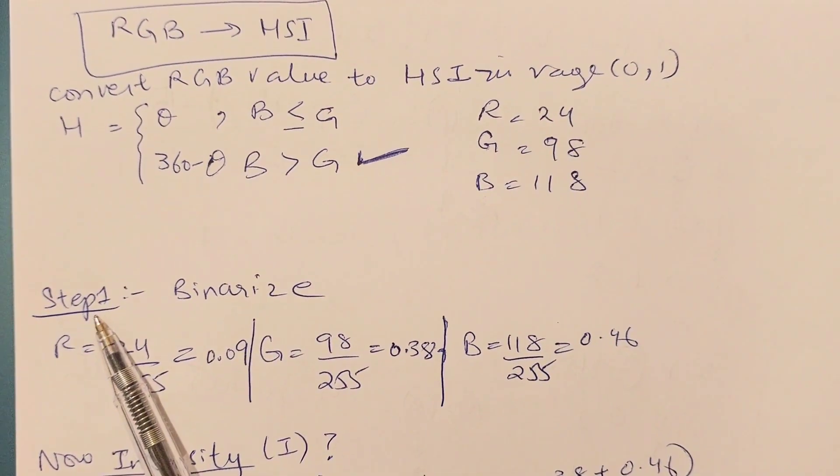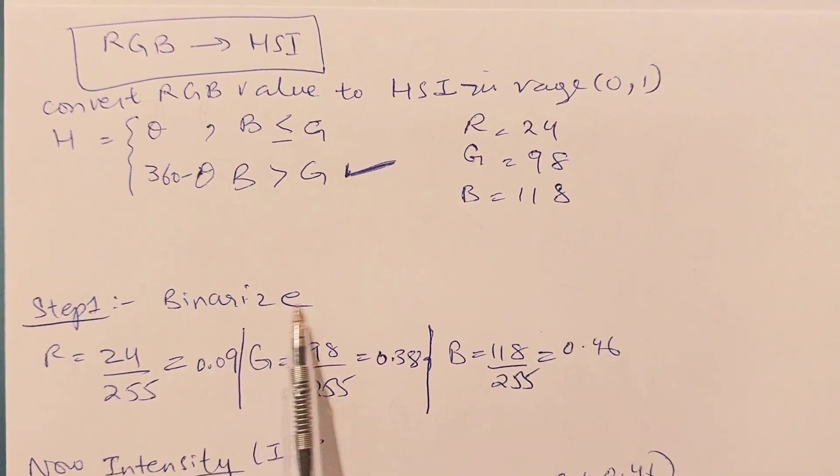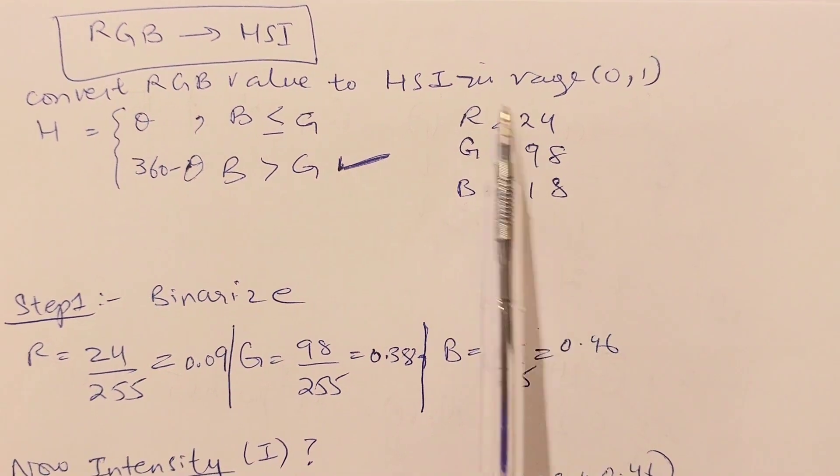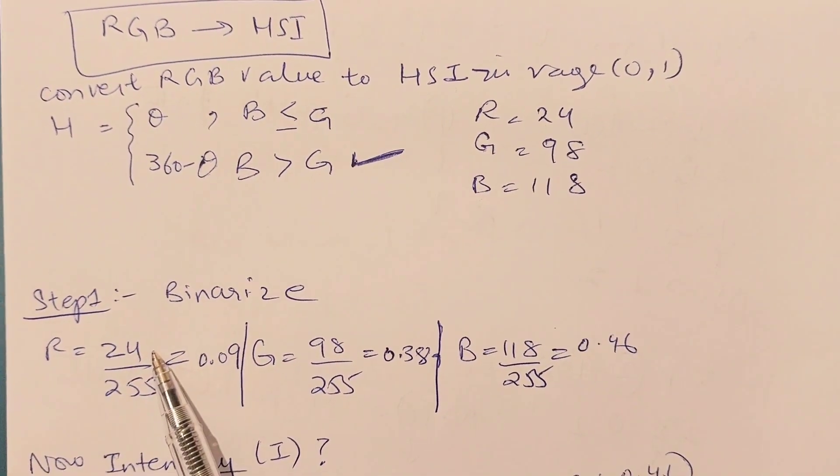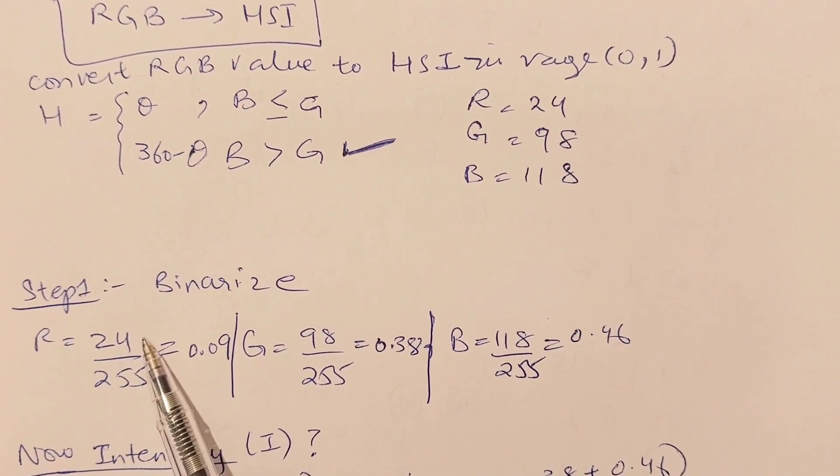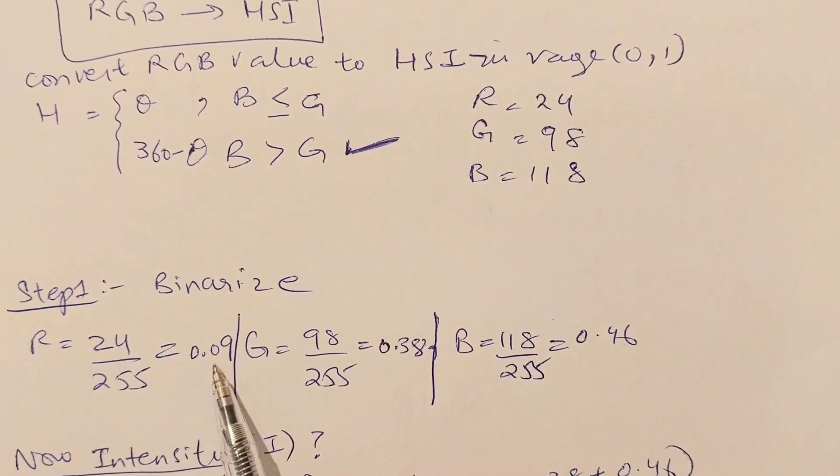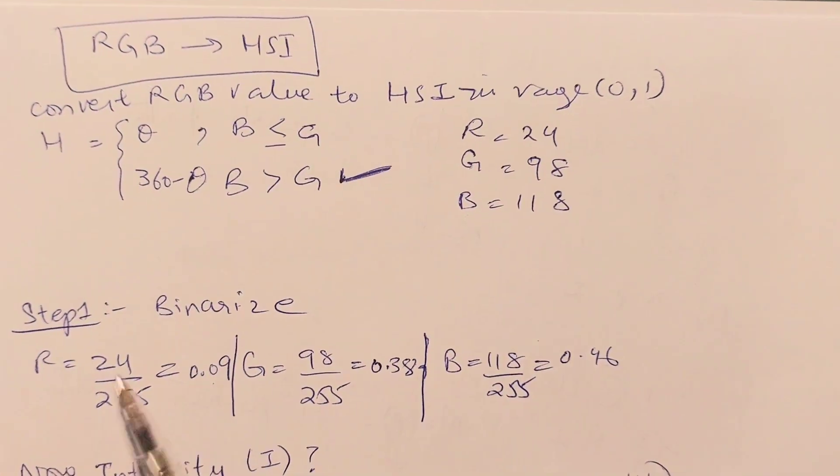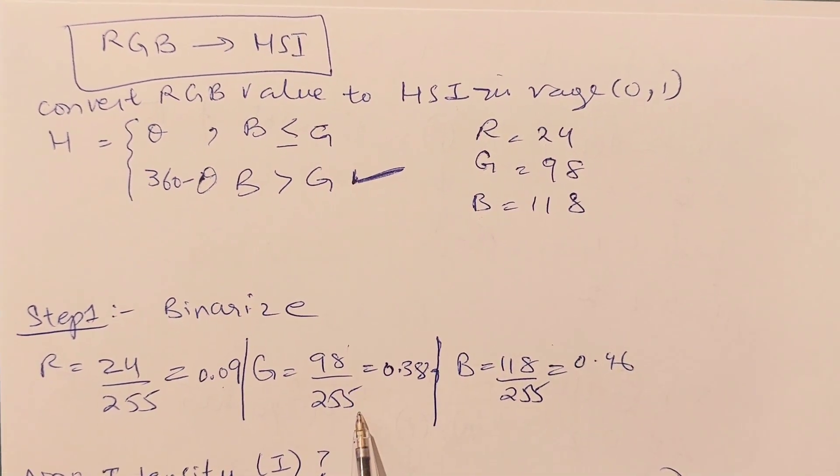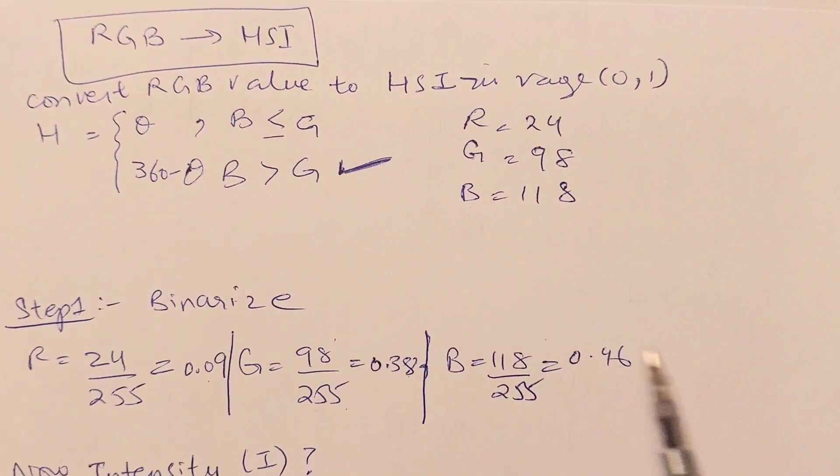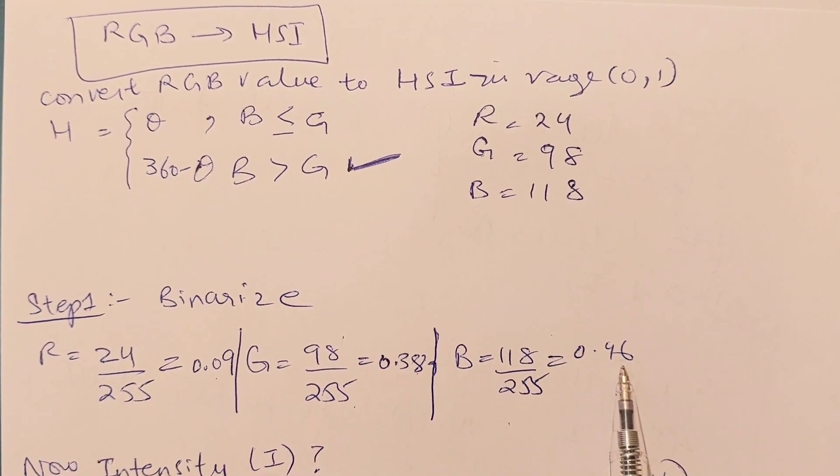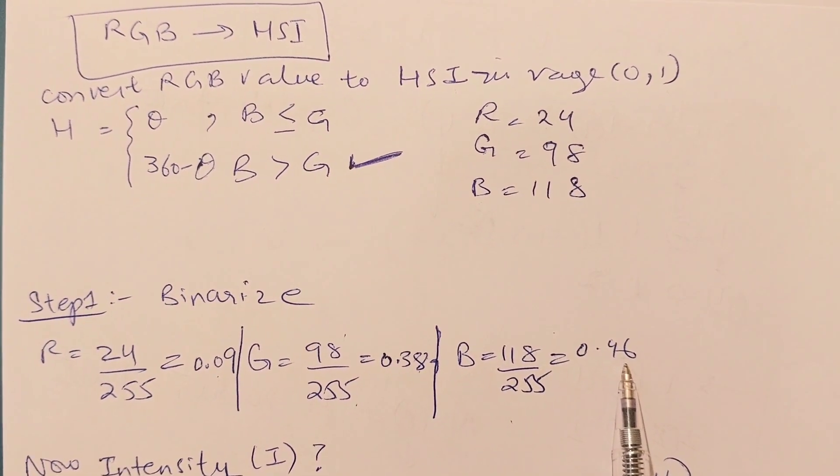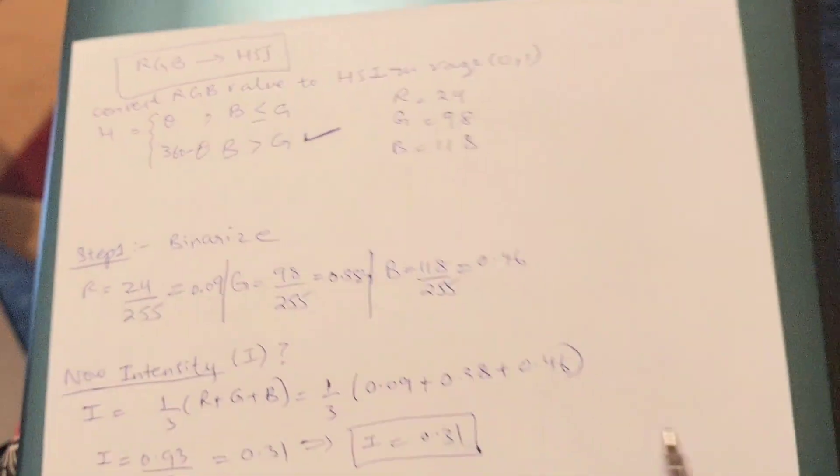To find these three values H, S, and I, the first step we need to perform is to binarize all the values of R, G, and B. When we binarize these values, we simply divide the value by 255. So when we divide 24 by 255, it comes out to be 0.09. 98 divided by 255 is 0.38, and 118 divided by 255 is 0.46.